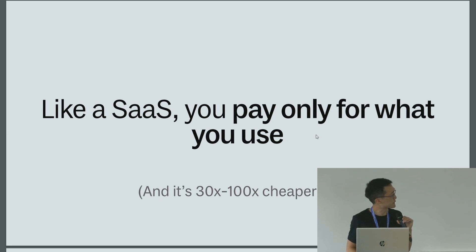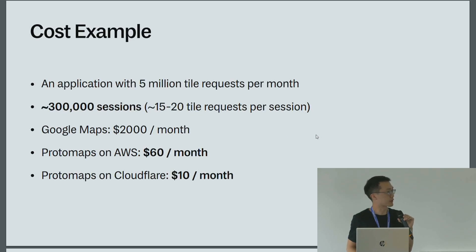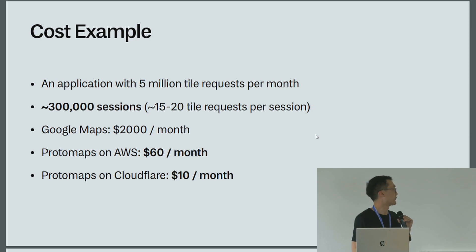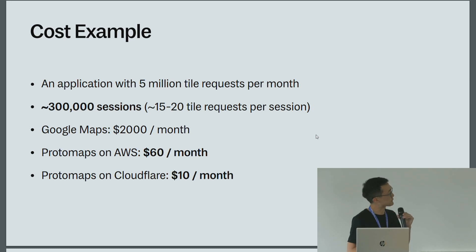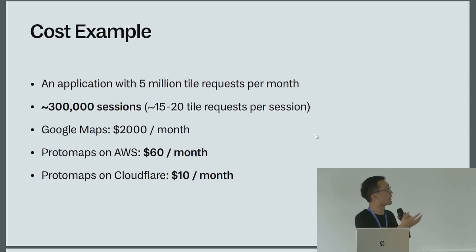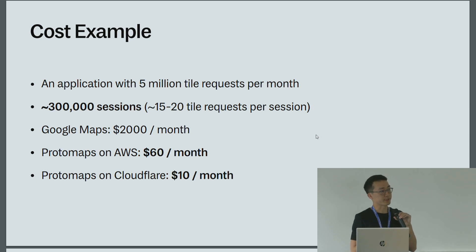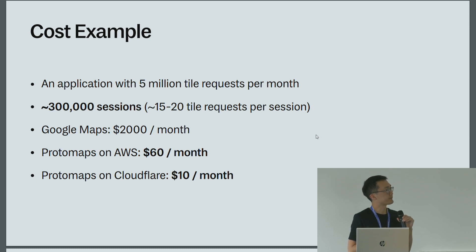For comparison to popular solutions: if you serve an OpenStreetMap basemap and do 5 million tile requests per month, on a tile provider like Google Maps that would be in the range of $2,000 a month. Using a system like Protomaps for the same thing, the cost of bandwidth, Lambda, and object storage comes out to more like $60 a month. On Cloudflare it can be as low as $10. The cost model is more complex than just buying a vendor solution — you have to factor in storage in bytes, bandwidth, and invocations — but generally the economics of using a cloud platform this way are quite good.